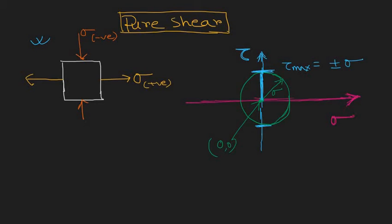To find the plane of maximum shear stress, we need to find the angle with the x-axis. The angle is 45 degrees, because on the Mohr's circle this angle is 2-theta, which equals 90 degrees. Since in Mohr's circle 2-theta in real cases corresponds to theta, we get theta equals 45 degrees. So let's draw that plane.